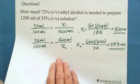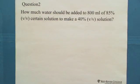Let me go to Question 2. How much water should be added to 800 milliliters of 85% certain solution to make a 40% solution?